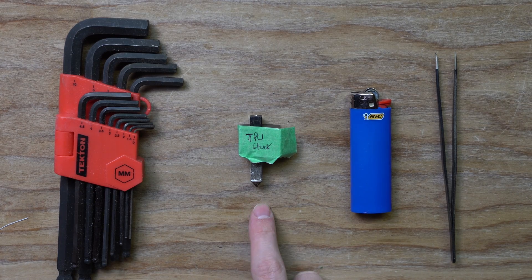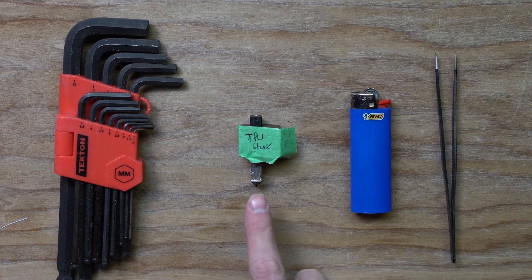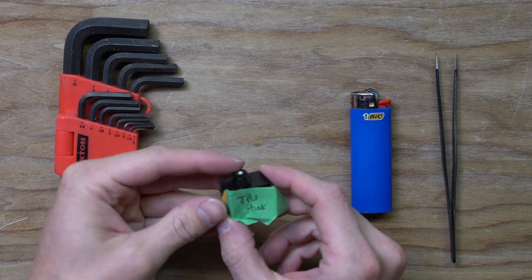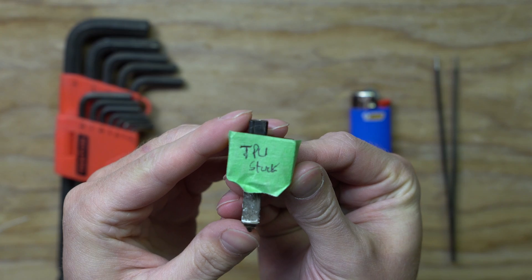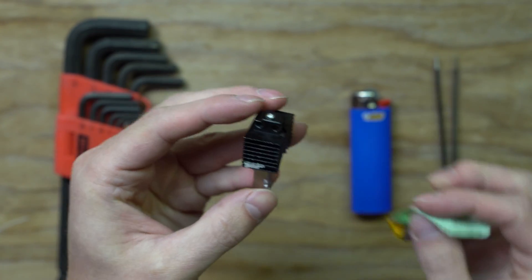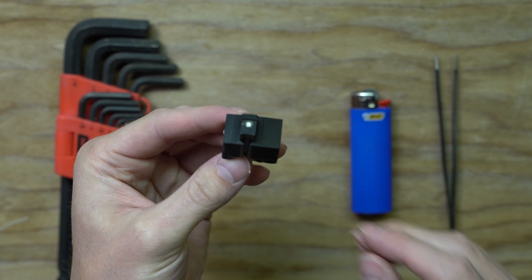So I have a nozzle here from my X1 Carbon. It's the same nozzle across the X series and the P series, and you can see on this label here I got some TPU stuck that just won't go through.